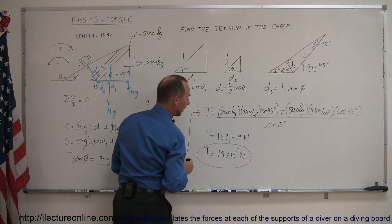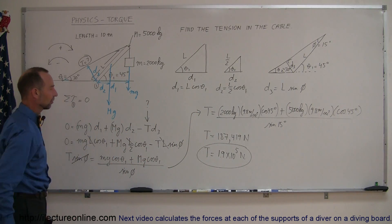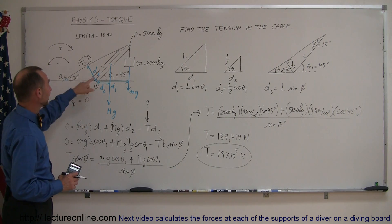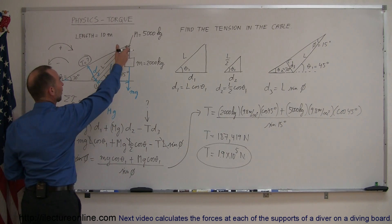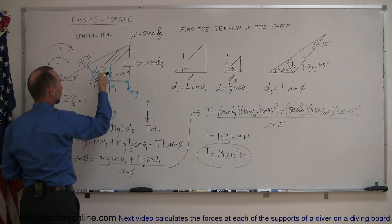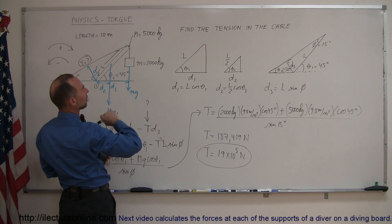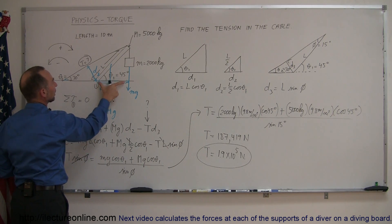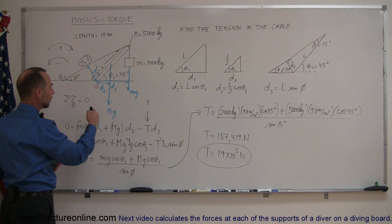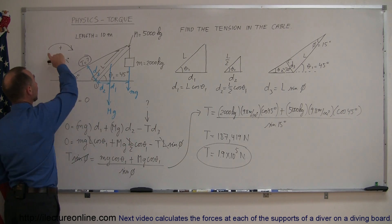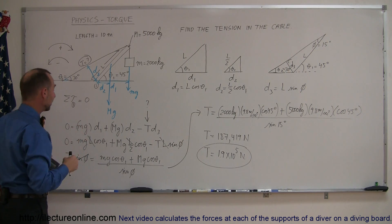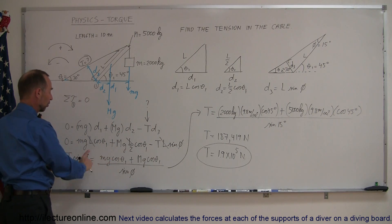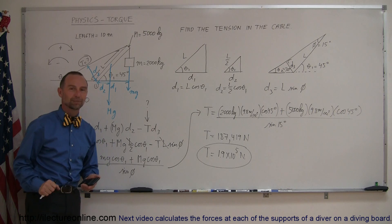Quick review: we had an interesting torque problem to find tension in the cable. We picked the pivot point, identified the three forces — the hanging weight, the beam's own weight, and the cable tension — then determined the perpendicular distances d1, d2, d3 from each force's line of action to the pivot point. We summed all torques to zero with clockwise positive, found d1, d2, d3 using right-triangle geometry, plugged everything in, solved for T, and substituted the numbers.